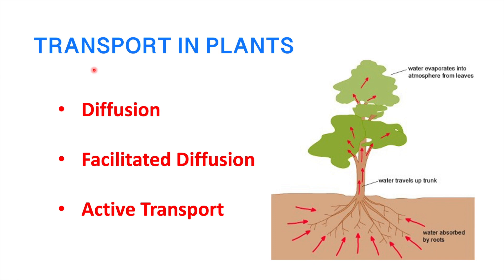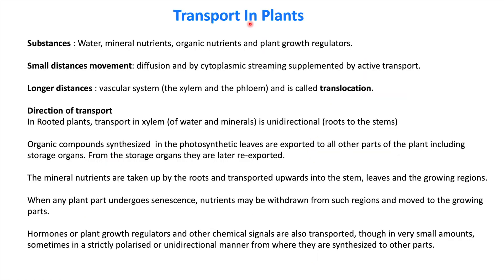Today we will study the transportation system in plants. Have you ever thought how minerals, organic compounds, and water move from the ground to different parts of a plant body? In this video we will study diffusion, facilitated diffusion, and active transport mechanisms. The substances transported in plants are water, mineral nutrients, organic nutrients, and plant growth regulators.